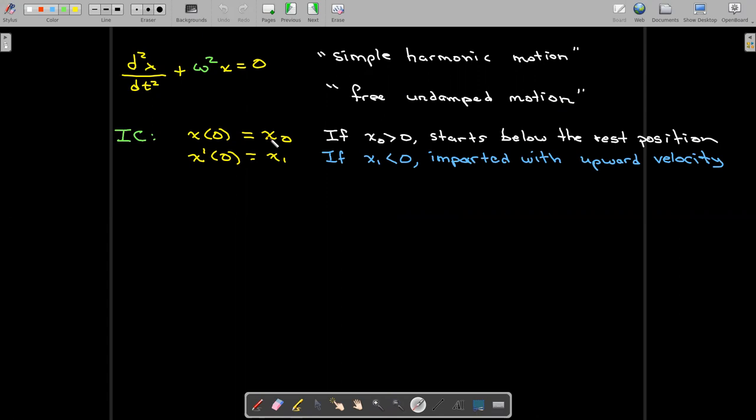So if we have, remember, down is positive in this model. And so if we have my initial position being positive, then we must have pulled the object down. It starts below the rest position. And if I look at the first derivative, so the velocity, if that's negative, if I have a negative initial velocity, that means that it is being pushed upwards when it's released.